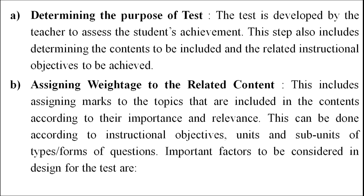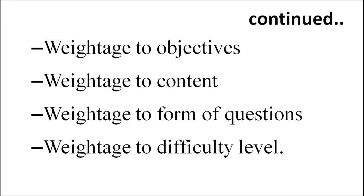Planning has three parts. The first is determining the purpose of the test — the test is developed by the teacher to assess the student's achievement, including determining the contents to be included and the related instructional objectives to be achieved. Second is assigning weightage to the related content, which includes assigning marks to the topics according to their importance and relevance, according to instructional objectives, units and subunits, and types and forms of questions. Important factors include weightage to objectives, weightage to content, weightage to form of questions, and weightage to difficulty level.